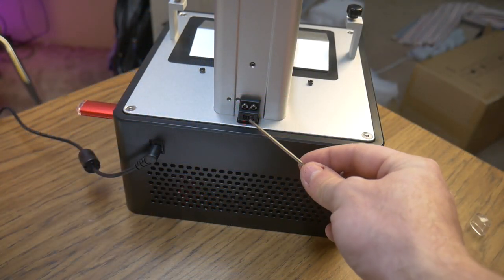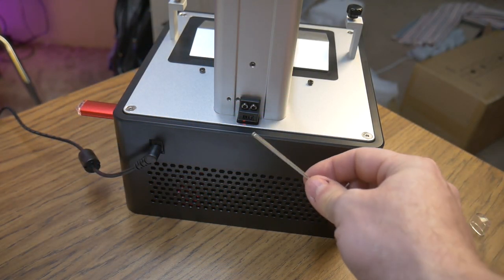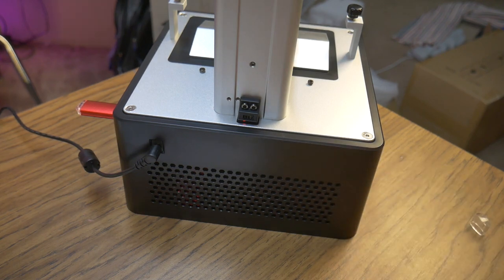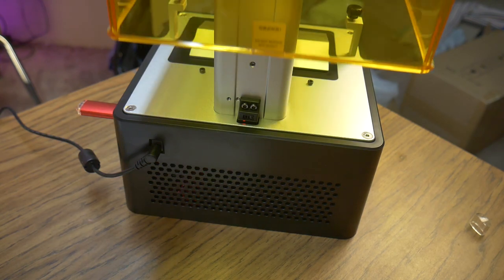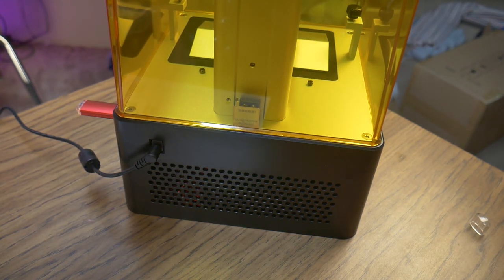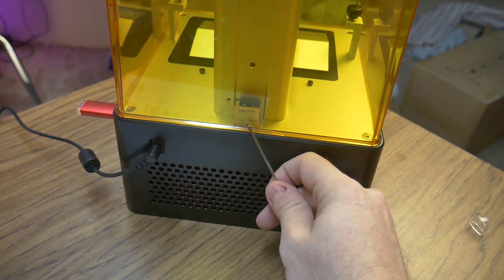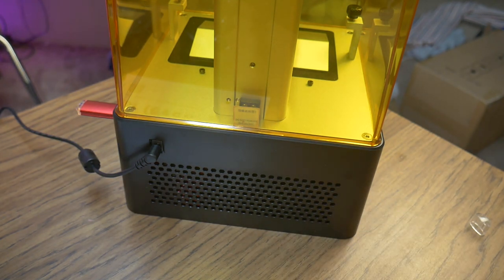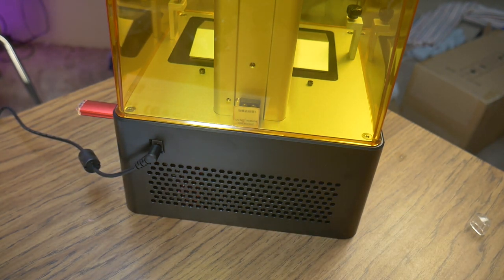One extra feature this printer has is a sensor that will pause the print if the lid is removed. I don't know if this is to protect the printer or the user, or to make pausing prints easier so you can check up on them. But all the same, this feature can be turned off in the tools menu of the touch screen if so desired.